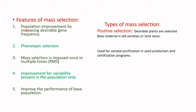Mass selection is a population improvement method that increases desirable genes — most often desirable genes associated with additive genetic variants — so it is essentially selection of additive genetic variants. Selection is based on phenotypic characters rather than genotypic characters, so it is not pure selection. Mass selection is imposed only once; if imposed multiple times it is known as recurrent mass selection. It improves only the variability already present in the population, as new variation cannot be created by selection alone.